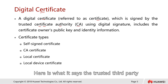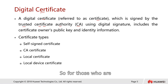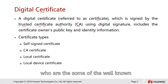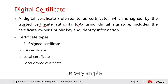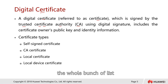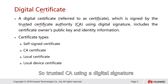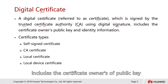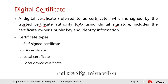For those interested in knowing who are some of the well-known trusted certificate authorities on the internet, you can do a simple task: go to your browser, for example Internet Explorer, and go under the certificate section. From there you can check the whole list of trusted root CAs. A trusted CA using a digital signature includes the certificate owner's public key and also their identity information.